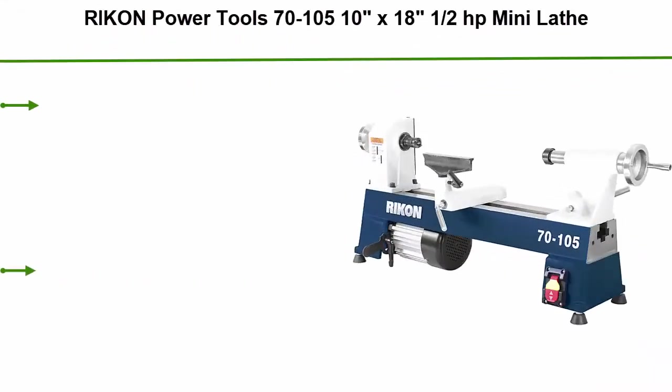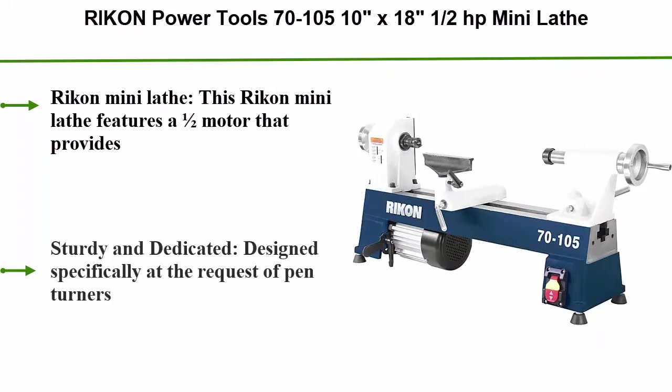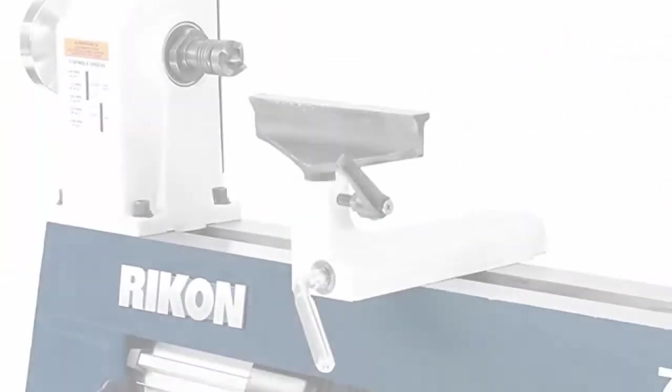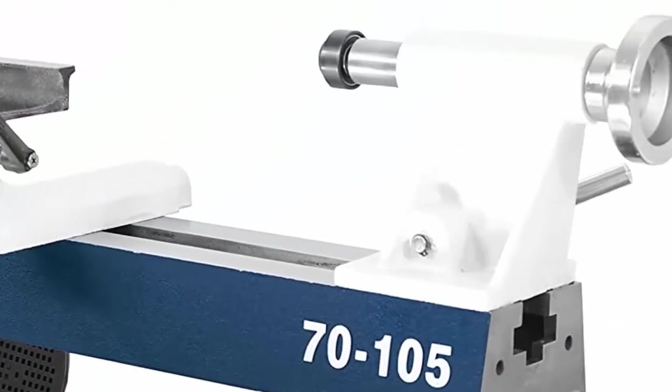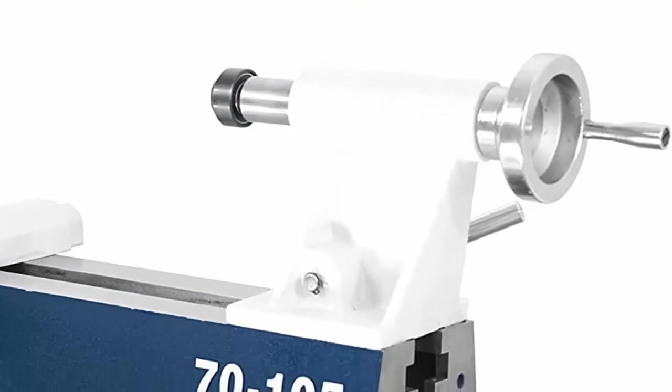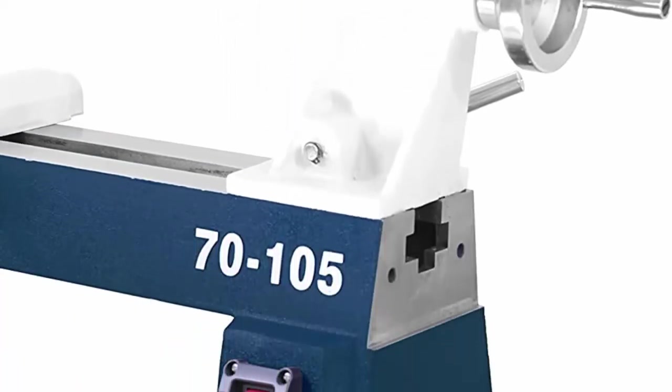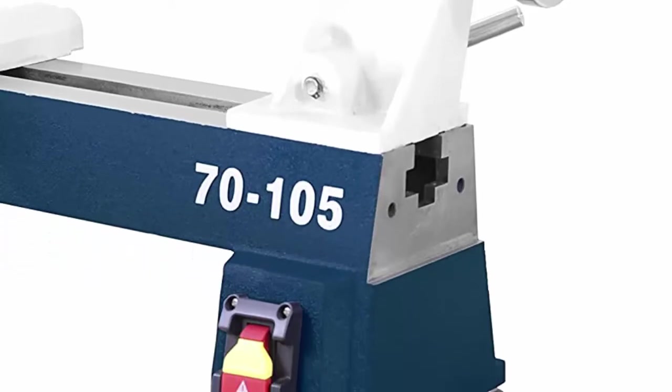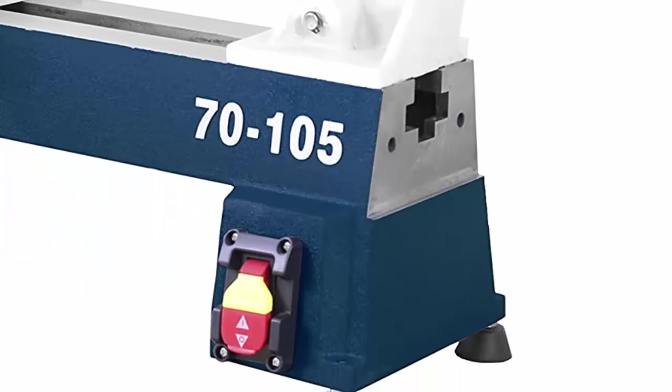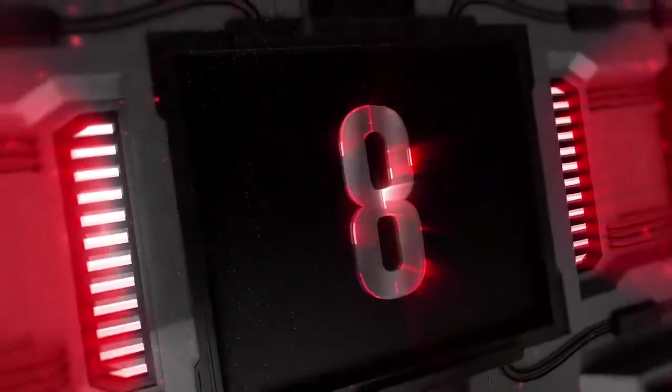Reichen Power Tools 70-105, 10x18, half horsepower mini lathe. This Reichen mini lathe features a half horsepower motor that provides ample power for all turning needs, with a 10 inch swing and 18 inches between centers. It has a self-ejecting tailstock and easy access to speed change. Sturdy and dedicated, designed specifically at the request of pen turners. Top 8.